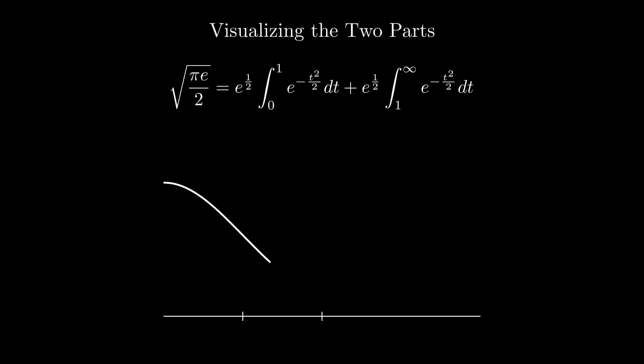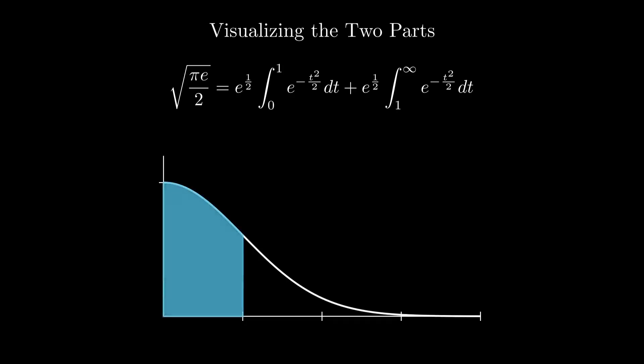So we visualize this with a bell curve. The blue area from 0 to 1 represents the infinite series, and the red area from 1 to infinity represents the remainder, which we now suspect is linked to the continued fraction.